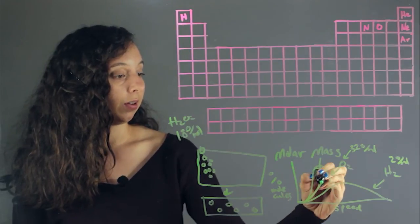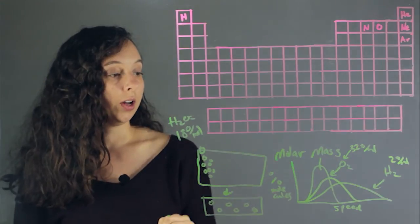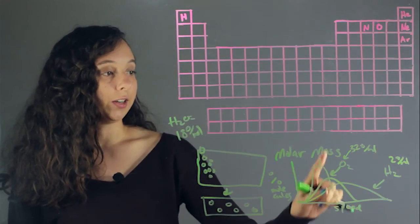So you're going to have some that are going fast and some that are going slow, but not as spread out as hydrogen, not as condensed as oxygen.